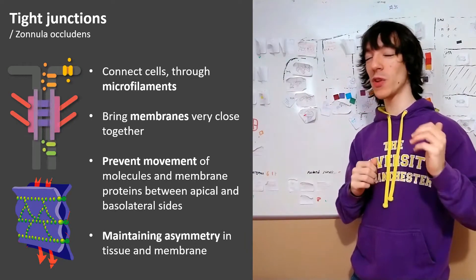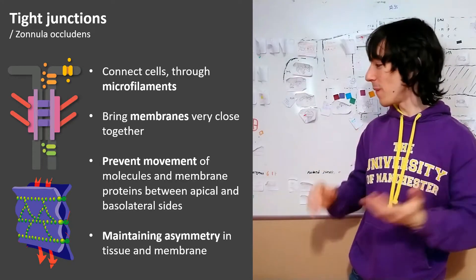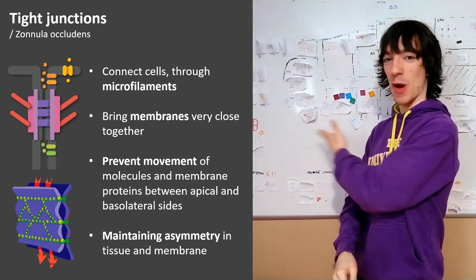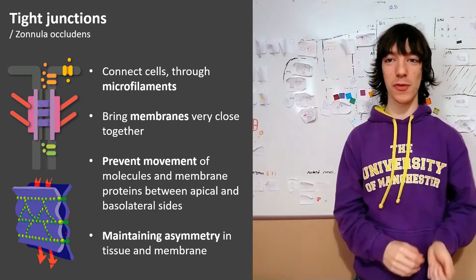In order to do that effectively, we don't only need one tight junction complex. We need a lot of them forming bands that go around the cell and are interconnected. That way no molecules can go through.